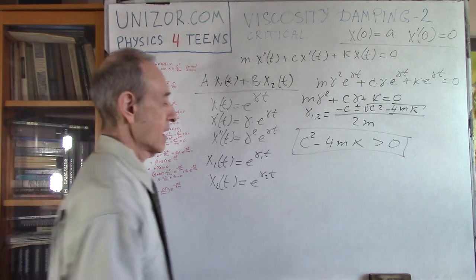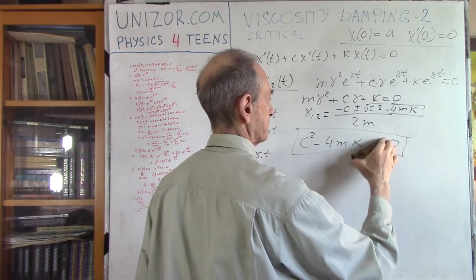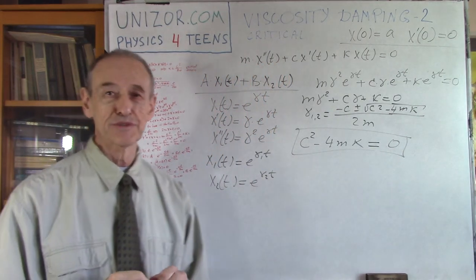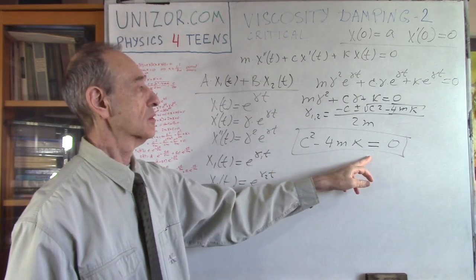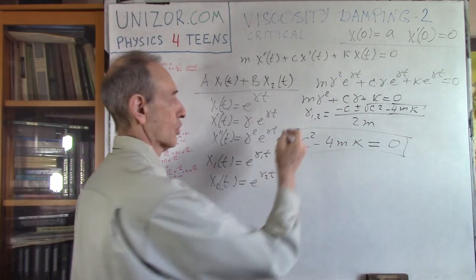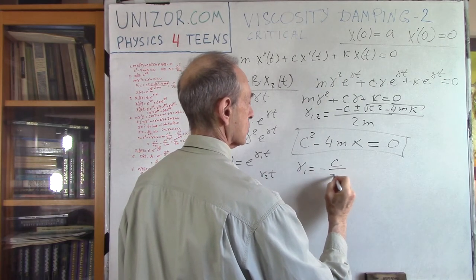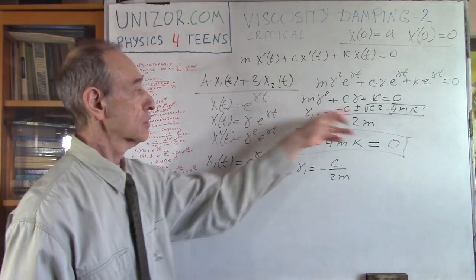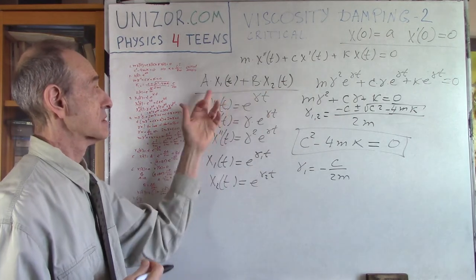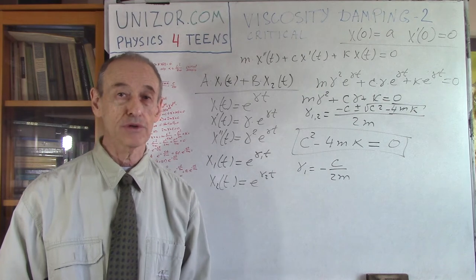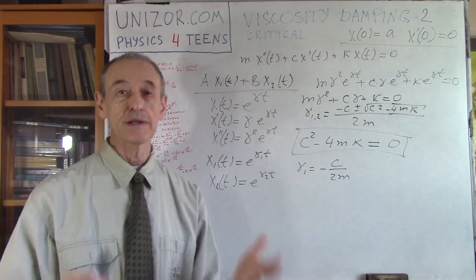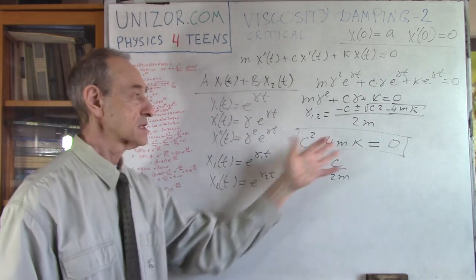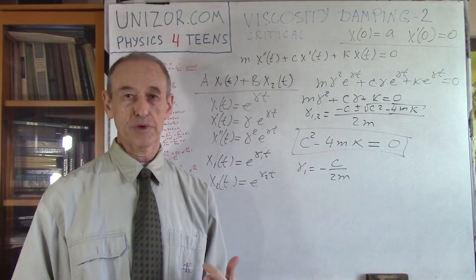Today we will handle a completely different case. If the discriminant c²−4mk equals zero, I have only one root: γ₁ = −c/(2m). The two solutions basically coincide, but I need two linearly independent functions to form the general solution. So where can I find the second one? That's why this is a completely separate case, and why I have devoted a separate lecture to it.